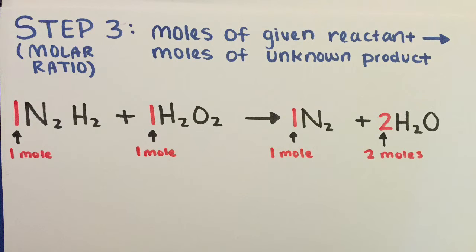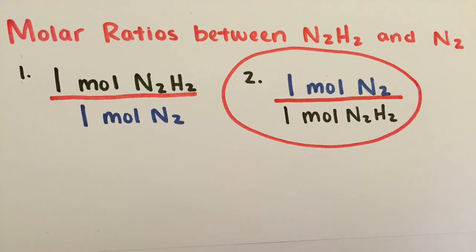So as we analyze the balanced chemical equation, we see that one mole of N2H2 reacts with one mole of H2O2 to produce one mole of N2 and two moles of H2O. Since our molar ratio must include the given reactant and the unknown product, H2O2 and H2O are not relevant. The molar ratio between N2H2 and N2 gives us two possible conversion factors shown here.